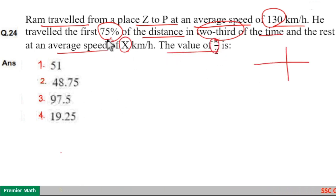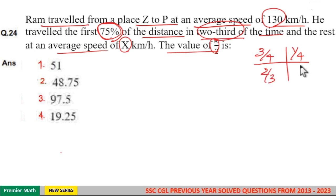Here you can see first 75% distance covered in two by third time. So 75% means three by fourth of the distance. So remaining distance is equal to one by fourth. Now first distance covered in two by third time. So second distance covered in one by third time.